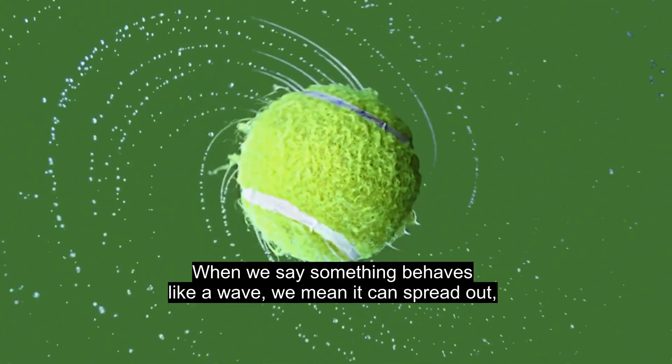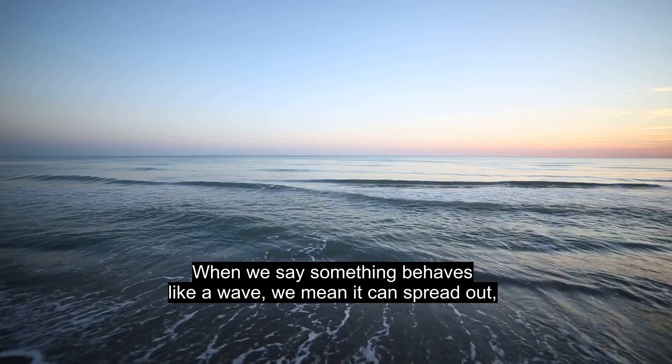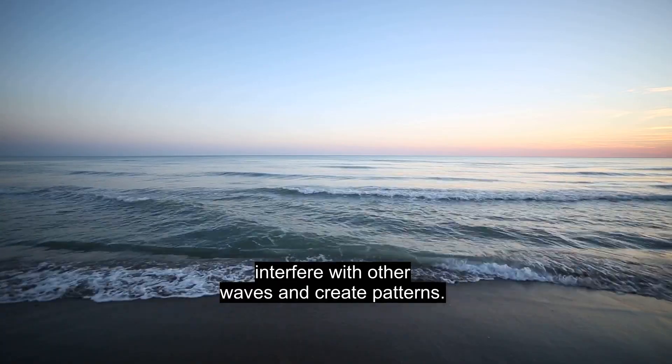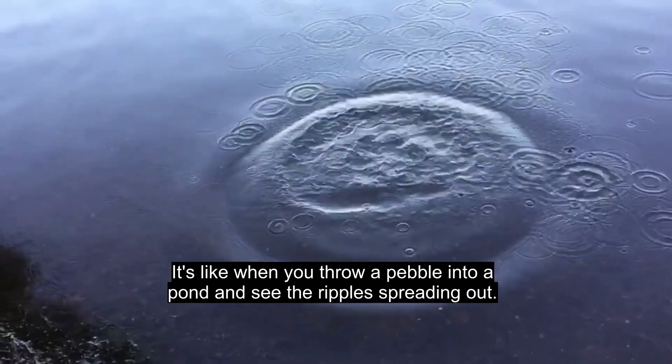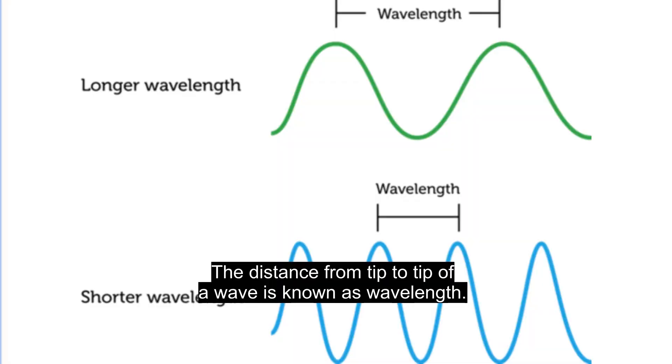When we say something behaves like a wave, we mean it can spread out, interfere with other waves, and create patterns. Just like when you throw a pebble into a pond and see the ripples spreading out, the distance from tip to tip of a wave is known as wavelength.